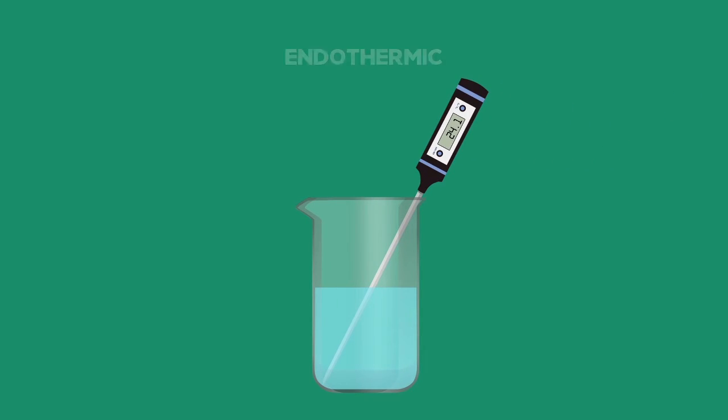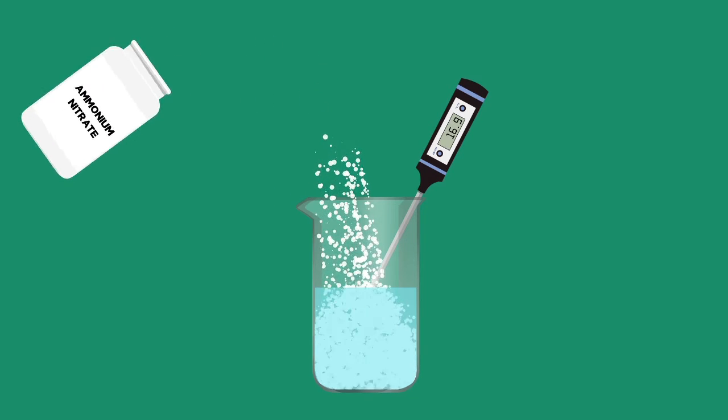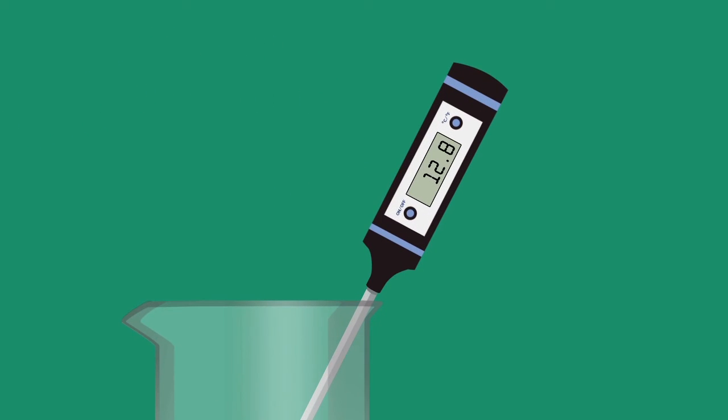The process where energy is absorbed from its surroundings and the container cools down is said to be endothermic. An example of this would be ammonium nitrate dissolving in water. This solution process absorbs so much energy that a drop of water under a beaker in which ammonium nitrate is dissolving can freeze.